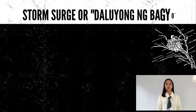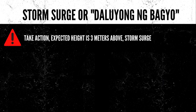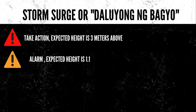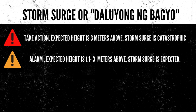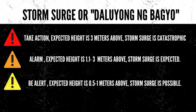Storm surge, or luyong ng bagyo in the Philippine system, is the irregular sea level rise during a tropical cyclone or bagyo. As shown on the table, red means take action — expected height is 3 meters and above, and storm surge is catastrophic. Orange means alarm — expected height is 1.1 to 3 meters, and storm surge is expected. Yellow means be alert — expected height is 0.5 to 1 meter, and storm surge is possible.